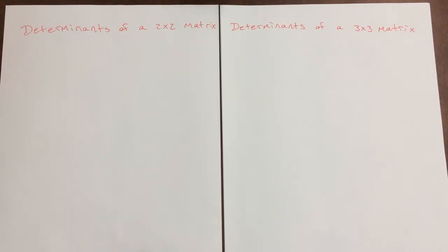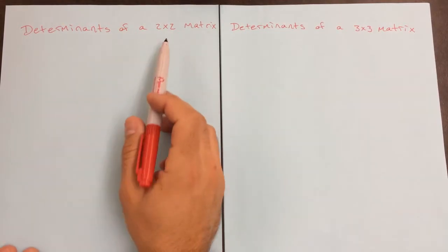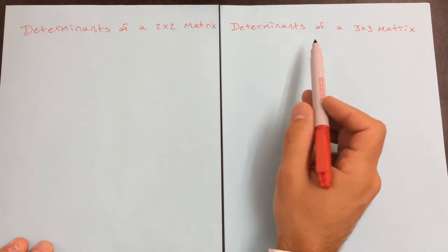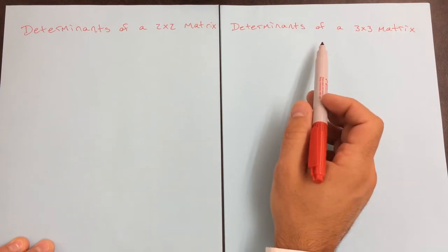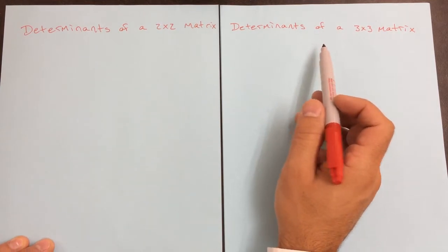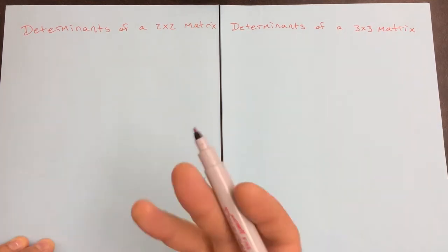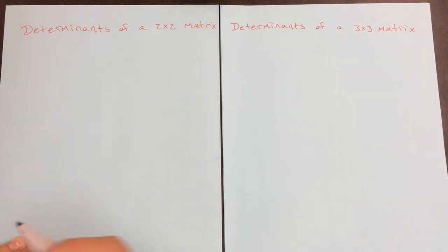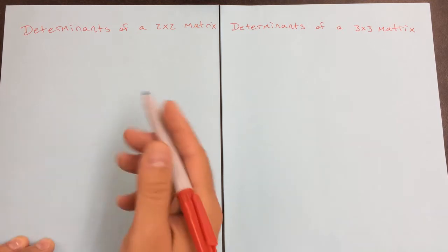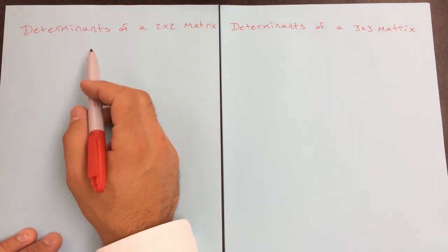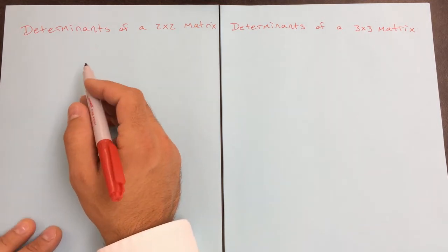Today I'm going to show you how to find determinants. I'm going to do the determinant of a 2x2 matrix and the determinant of a 3x3 matrix. That's actually one determinant per matrix, but because I'm going to be doing multiple, we're going to say determinants.